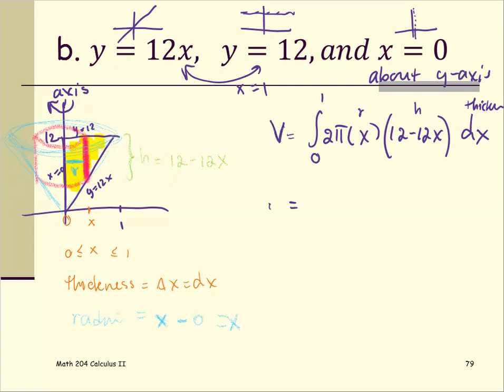Cleaning up, I'll simplify as much as we can. Take 2π out. Multiply x into the parentheses. We have 12x minus 12x squared with respect to x from zero to 1.